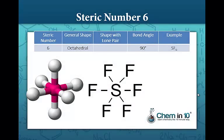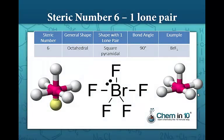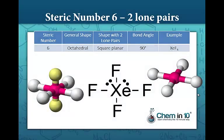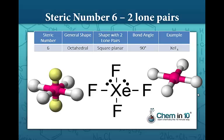Steric number of six, we have an octahedral molecule with 90 degree bond angles. When one of those bonds is replaced by a lone pair, we have a square pyramidal, and with two lone pairs we have a square planar with 90 degree bond angles.